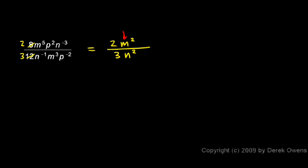So now the m's and the n's are taken care of, as well as the numbers, so now I just need to look at the p's. There's a p squared and a p to the negative 2. What I'll do is imagine this p to the negative 2 going up to the top. And when that happens, the negative 2 becomes a positive 2.